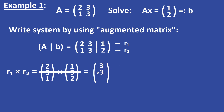Don't forget the minus sign — the second entry is minus the determinant. For the last entry of the cross product, you cross out the last column and compute the determinant of that 2x2 submatrix. The last entry is equal to 2 times 3 minus 3 times 1, which is equal to 3.